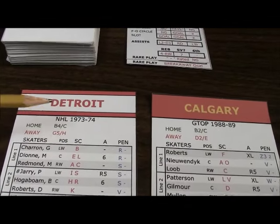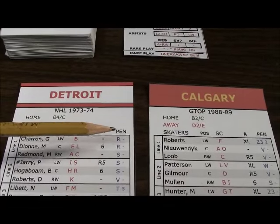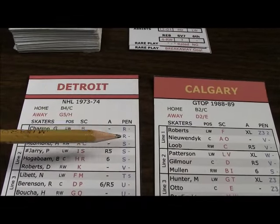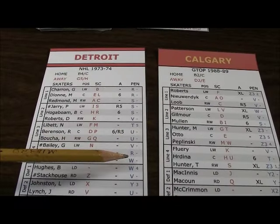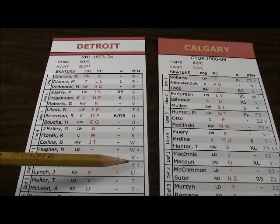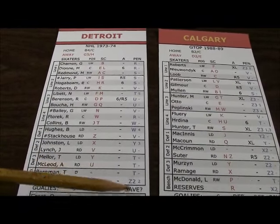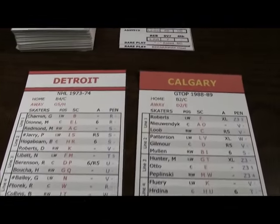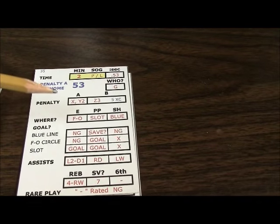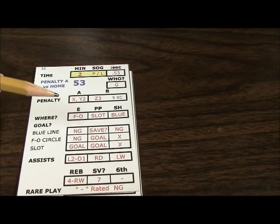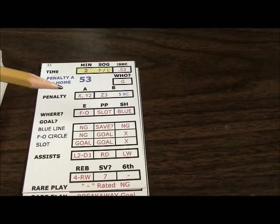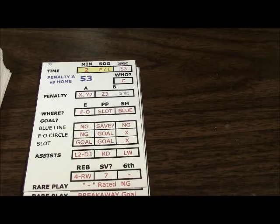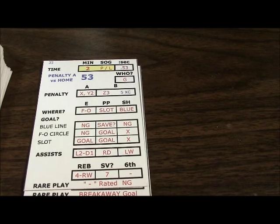Detroit will be the road team. Checking the ratings — in this example, nobody on Detroit had a rating of X or Y2. So for this time sequence, no penalty happened, and you would flip another action card to begin the next time sequence.